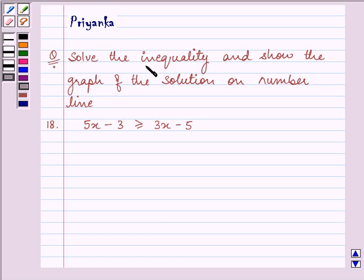It says, solve the inequality and show the graph of the solution on number line. Now this is the inequality which is given to us. That is, 5x minus 3 is greater than or equal to 3x minus 5.